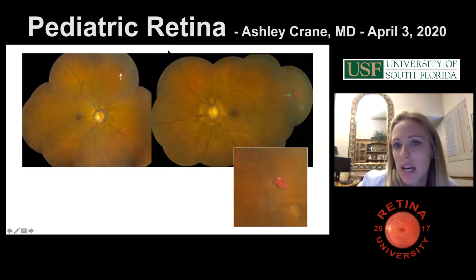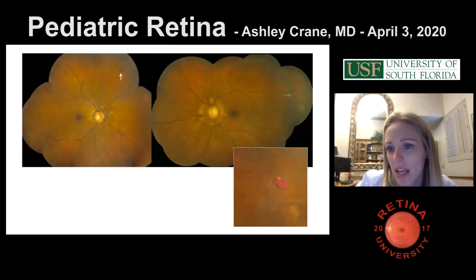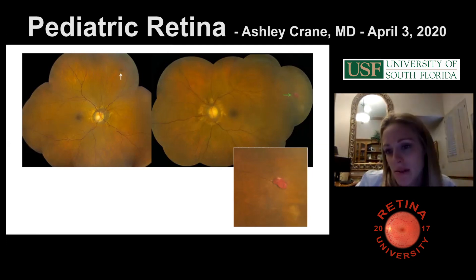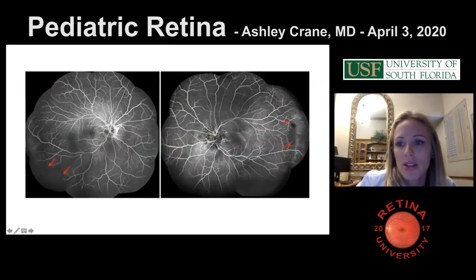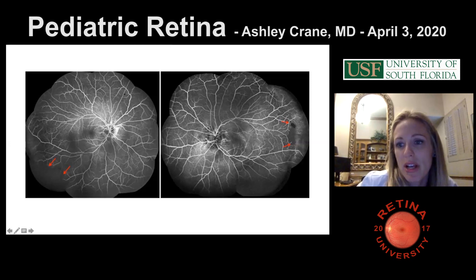On the FA, there is blocking where the hemorrhage was and non-perfusion in both eyes in the periphery, most easily seen temporally but believed to be 360 degrees. If the FA showed a C-fan pattern, what would that be called? A C-fan. With a C-fan in a young patient with non-perfusion, the most likely diagnosis is sickle cell.